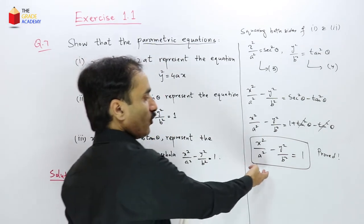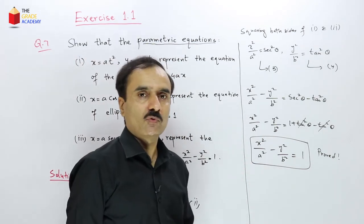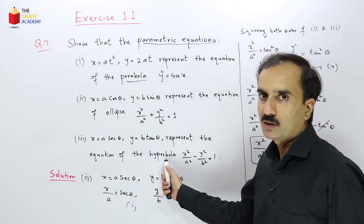The graph of x²/a² − y²/b² = 1 is called a hyperbola.